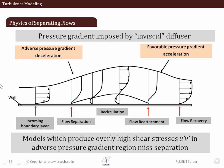The separation physics works in the following way: the flow is coming in with an incoming boundary layer. Because of an adverse pressure gradient — a pressure gradient which opposes the direction of the flow — there can be flow separation. If there is a favorable pressure gradient, meaning the pressure is reducing in the direction of flow, then you get reattachment of the flow. So a favorable pressure gradient leads to reattachment, while an adverse pressure gradient, where pressure increases downstream, leads to separation.